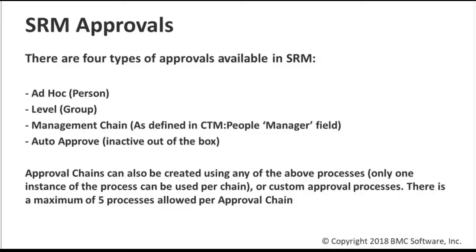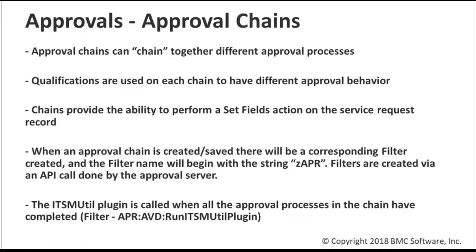Approval chains can be used with any of these processes or any custom processes you may have. There's a limit of five processes per approval chain. They allow you to chain together different approval processes and have qualifications to determine when they run. You can use SR type fields in those qualifications, or various other fields like categories, specific SRDs, or whatever other qualifications you want to add. They're available in the approval chain console. They also have the option to do a set fields — you definitely need to do a set fields once everything is approved, to set the status to planning, rejected, and all those others. You can also set other fields on the SRM request form.